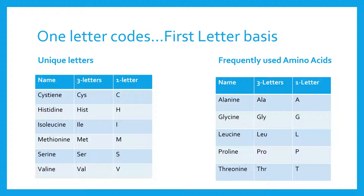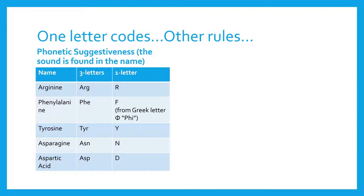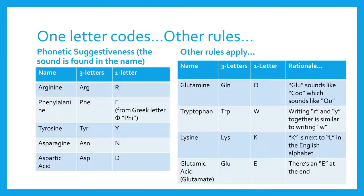Arginine, phenylalanine, tyrosine, asparagine, and aspartic acid all use letters that are suggestive of their pronunciation. The remaining amino acids have their own arbitrary rules, from having a letter in their name to merely using the next letter available in the alphabet.